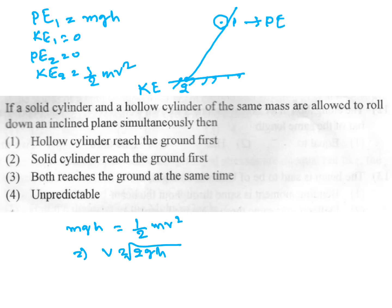The velocity is independent of mass. So whether it is a hollow or solid cylinder, it depends on height only. Therefore both reach the ground at the same time. Option 3 is the answer.